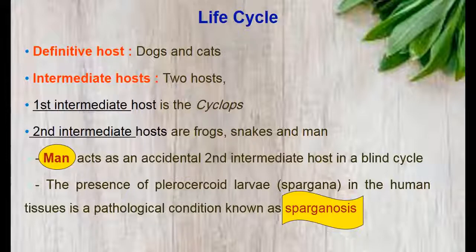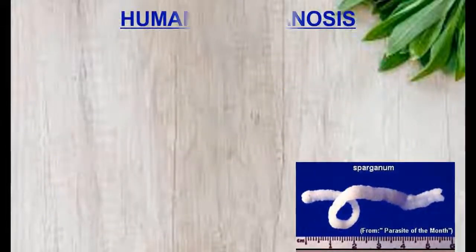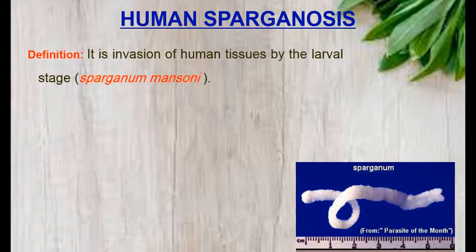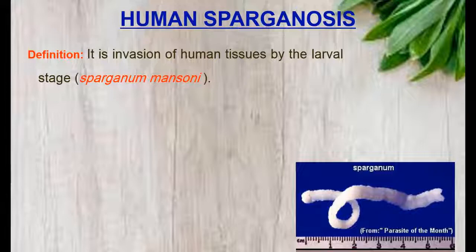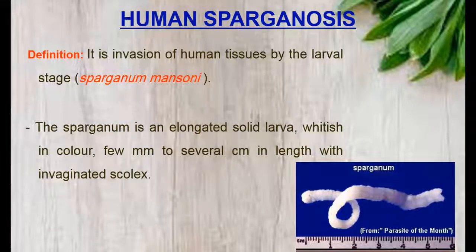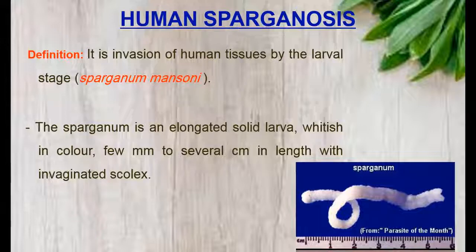The presence of plerocercoid larvae in human tissue is a pathological condition known as sparganosis. Human sparganosis is defined as the invasion of human tissues by the larval stage, Sparganum monsoni. The Sparganum is an elongated solid larva, white in color, a few millimeters to several centimeters in length, with an invaginated scolex.